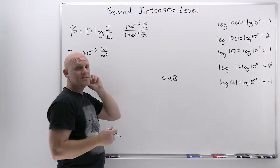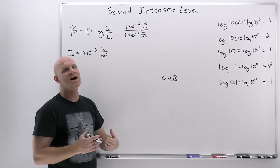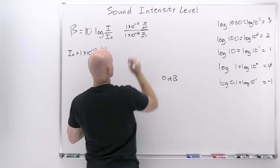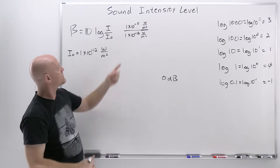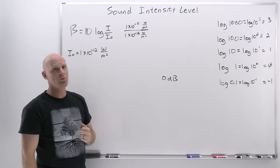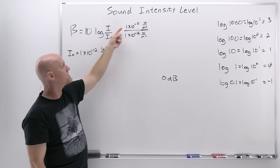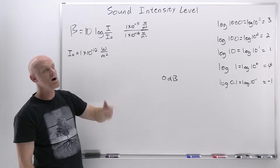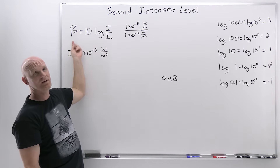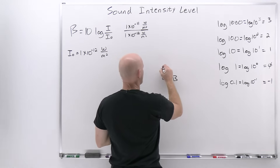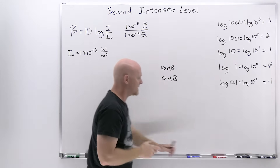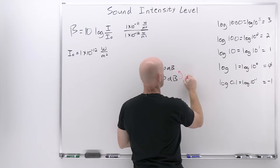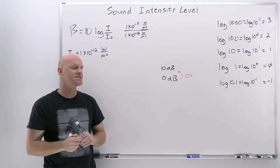Now let's say we make the intensity 10 times higher than the threshold — instead of 1×10⁻¹², it would be 1×10⁻¹¹. The ratio I over I-naught would now equal 10. We take the log of that ratio, and the log of 10 is 1. Then 1 times 10 gives us a value of 10 decibels. So going from 0 decibels to 10 decibels represents a 10-times jump in sound intensity.